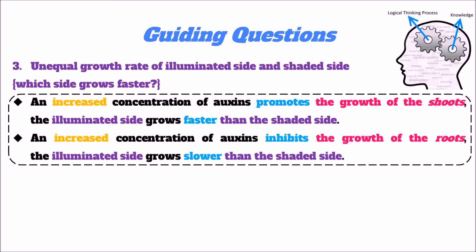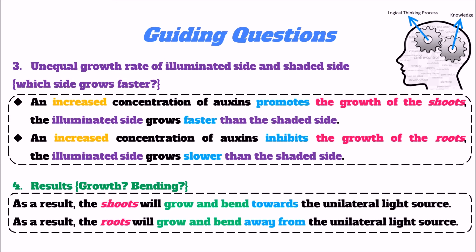Last but not least, Question 4: we need to talk about the result. When discussing the result, we mention the two basic dimensions of growth — whether certain parts of the plant grow, and whether any bending is observed. The cases can be growing straight, or growing with bending at a large or small angle. As a result, the shoot will grow and bend towards the unilateral light source, and the root will grow and bend away from the unilateral light source.